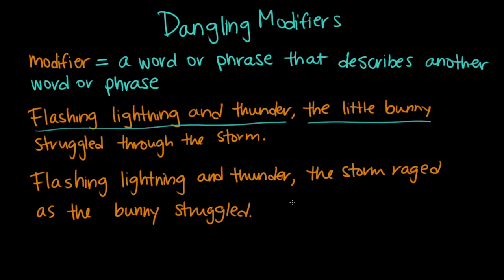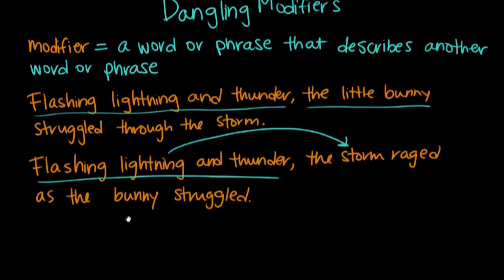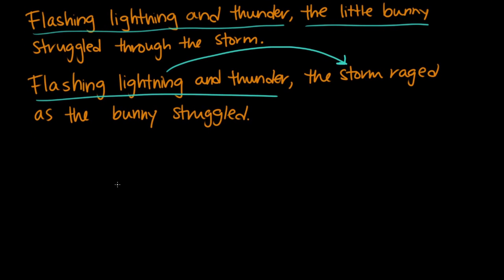So this is all better. The modifier flashing, lightning, and thunder comes right before the storm now. So this makes more sense. We got rid of the dangling modifier — it's not hanging out looking like it's modifying the wrong noun. So if you're doing editing or looking at a sentence, see if you can spot what it is that that modifier is supposed to be describing, and then just make sure that that noun or phrase comes right after the modifier. Like in this example, we had to pretty much completely rewrite the sentence — it still gets across the same idea, but we had to put the nouns in a different order so the modifier wasn't dangling anymore.